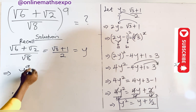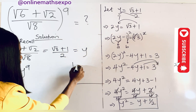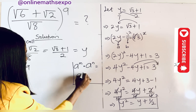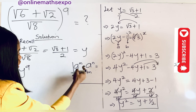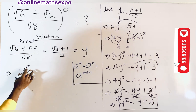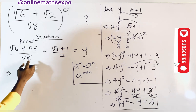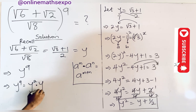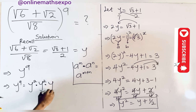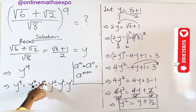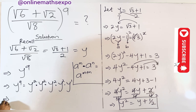To simplify y⁹, we use the exponent rule: a^m times a^n equals a^(m+n). So we split y⁹ as y² times y² times y² times y² times y¹. Adding all the powers: 2+2+2+2+1 equals 9. Now, since y² equals y plus one half, we can replace each y² accordingly.